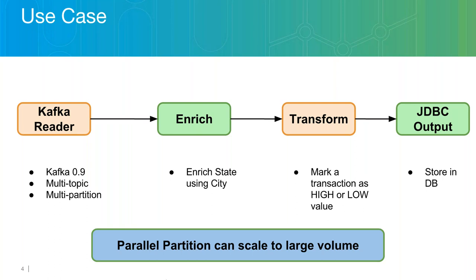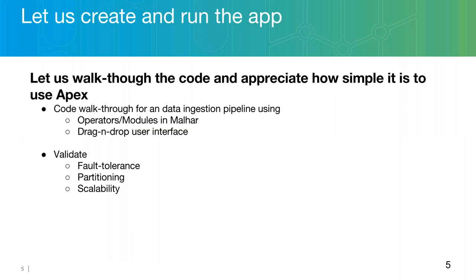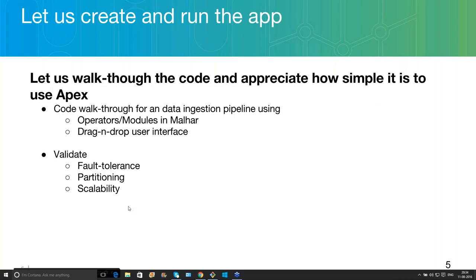A key point about parallel partitioning: if you have two topics and three partitions in Kafka you can have six Kafka readers, each reading from one partition. The rest of the pipeline — enrich, transform, JDBC — can also run in parallel to each reader. So if you have six readers there will be six enrich operators, six transform operators, and six JDBC operators all in one straight line per reader. This way you can run pipelines in parallel and greatly increase the throughput of your application. Let's do a quick code walkthrough and then see the demo running on the system.